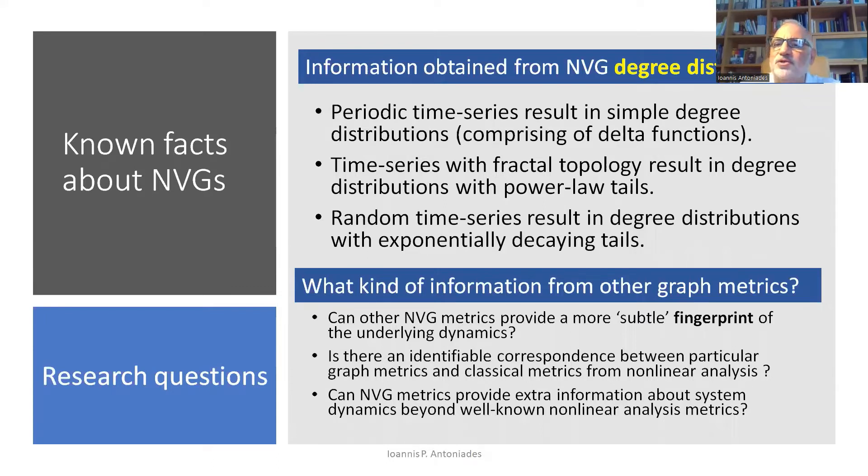So if you look at the degree distribution of all the nodes in the visibility graph. Well, if the underlying series was periodic, you would get simple degree distributions. If they have fractal topology, you will get degree distributions which, surprisingly or not surprisingly, have power law tails. And if you had random time series, you get exponentially decaying tails. So you get a lot of information about the topology of the time series by looking at the degree.